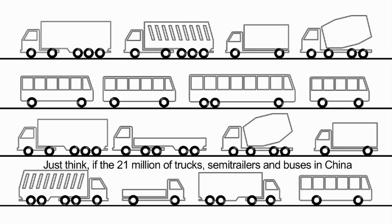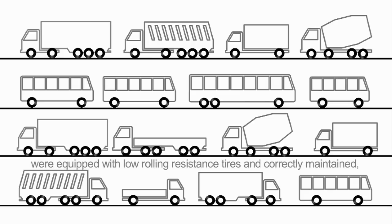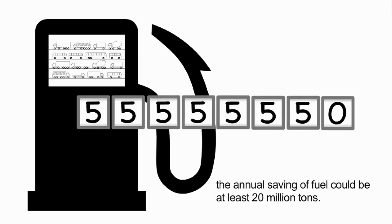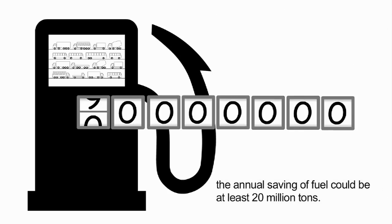Just think, if the 21 million trucks, semi-trailers, and buses in China were equipped with low rolling resistance tires and correctly maintained, the annual savings of fuel could be at least 20 million tons.